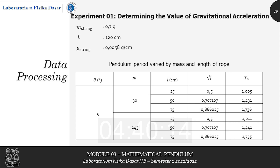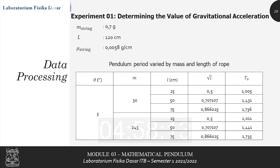Moving to the data processing section, experiment number one is determining the value of gravitational acceleration. We have the mass of the string, the length, and the linear mass density (mu) of the string. This data is provided only to show that the mass of the string may be neglected. Next, we collect period data for the variations specified in the table. The pendulum periods are varied by mass and the length of the string, with a constant theta of 5 degrees.